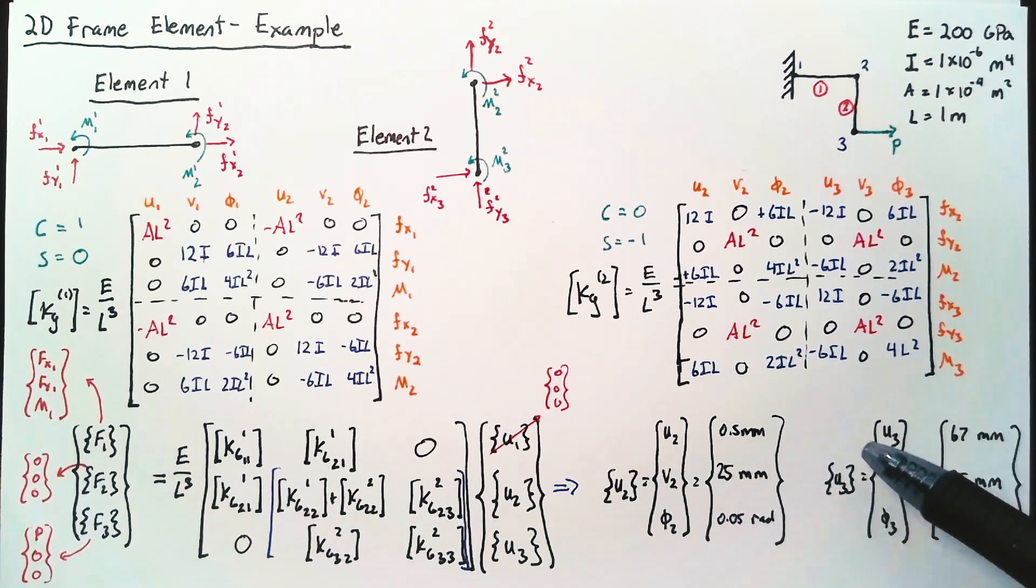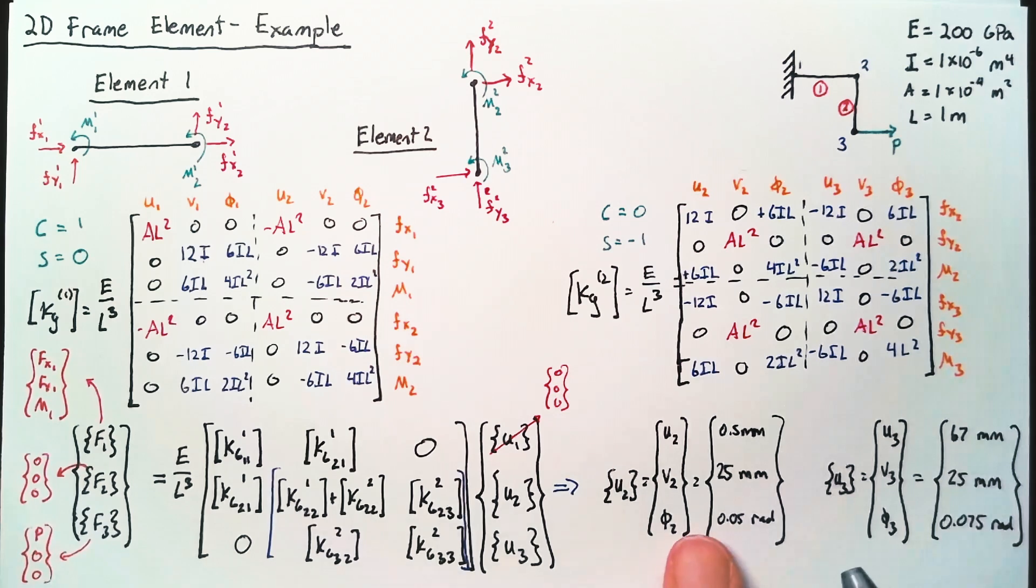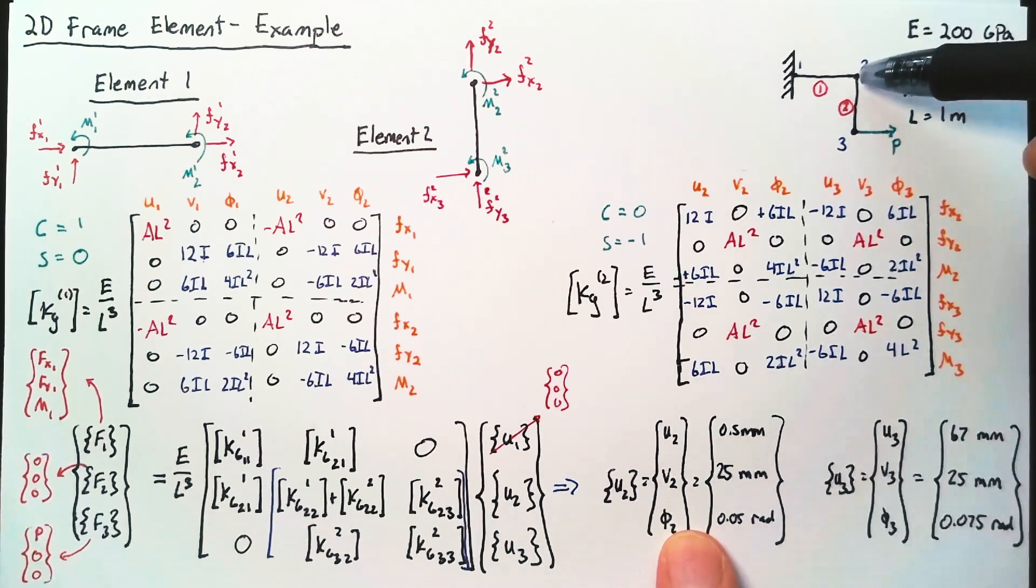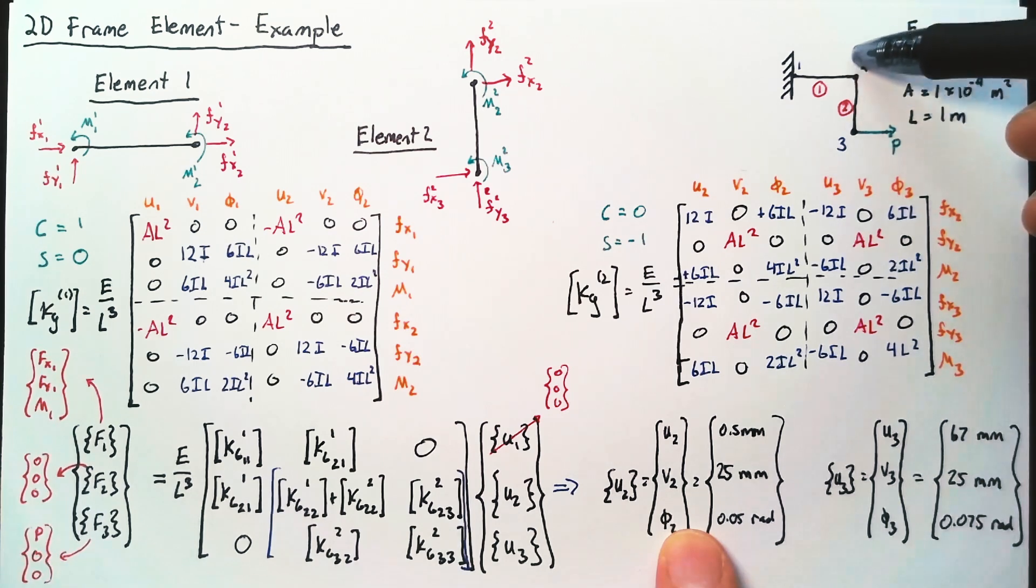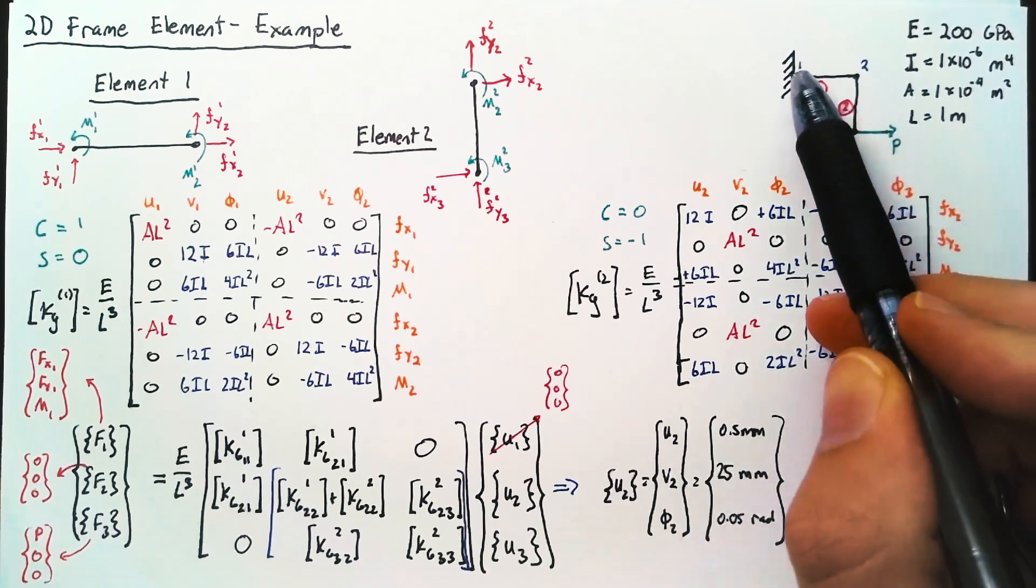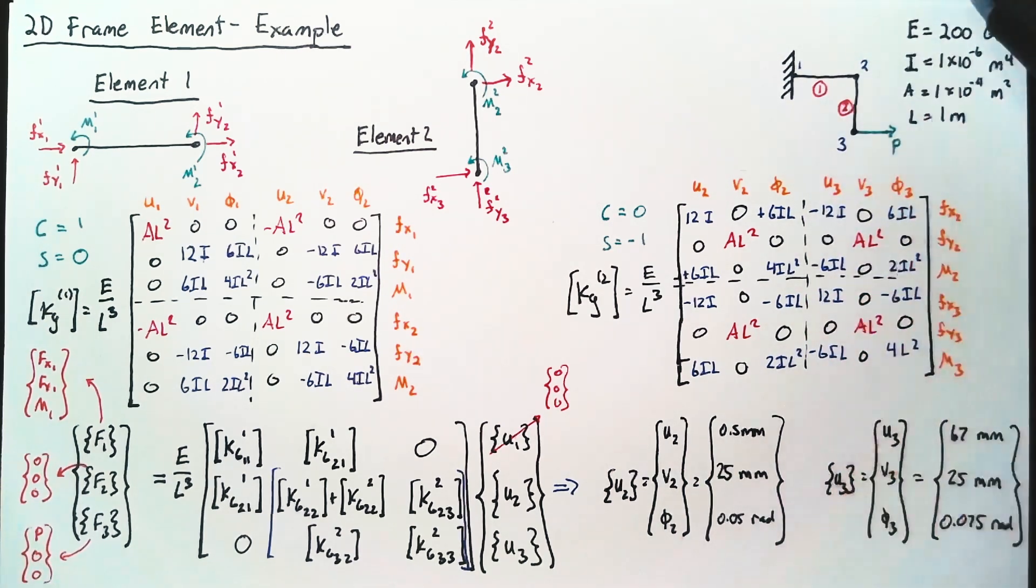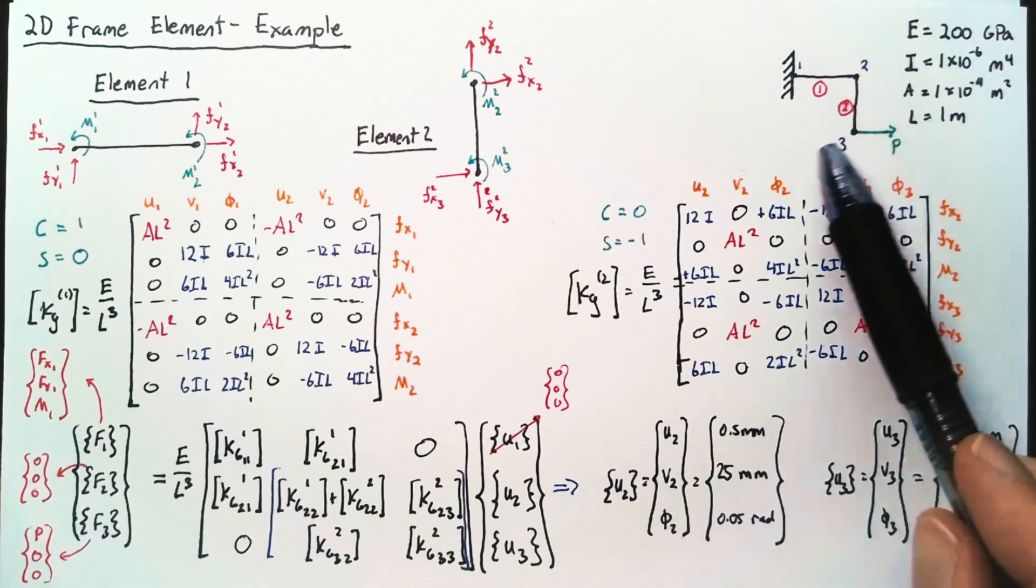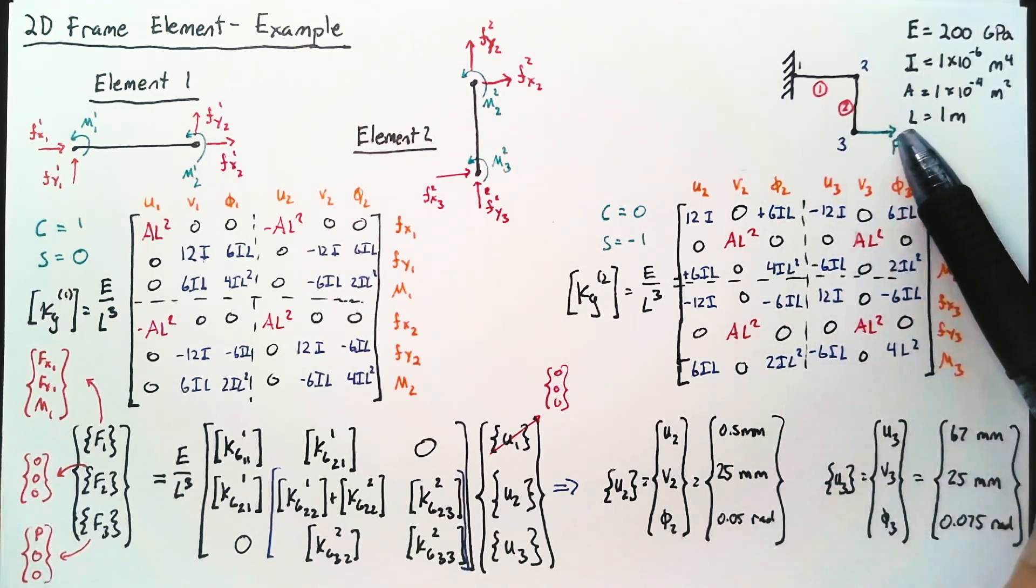And just looking at these results, making sure that they make sense, the movement of node 2 is significantly more upward than it is outward. So this movement in the x direction is because of the extension of the rod, whereas the movement upward is because we're applying a moment with this force P.